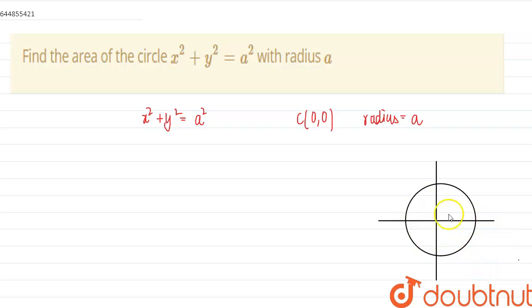Okay, so this is a circle with center at (0,0) and the radius is a. So this is the x, y axis, minus x and minus y.